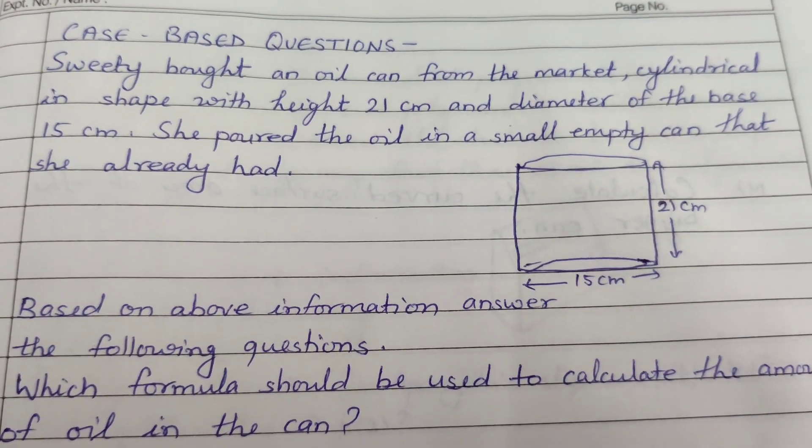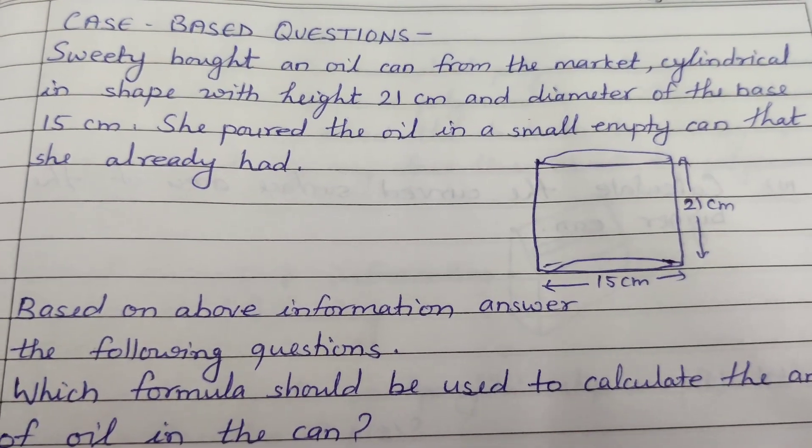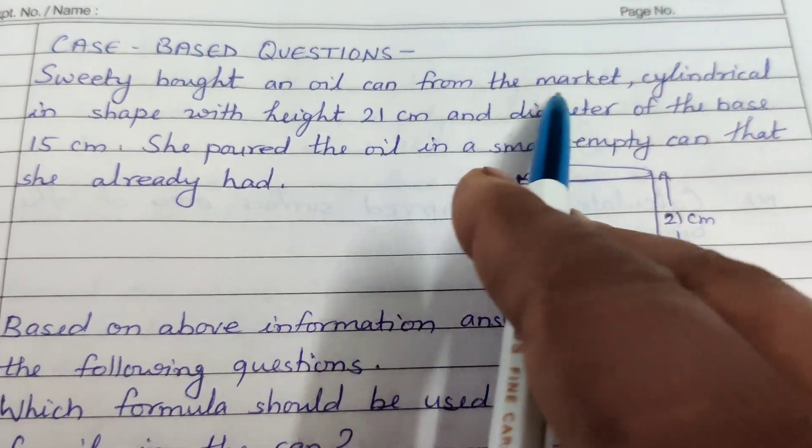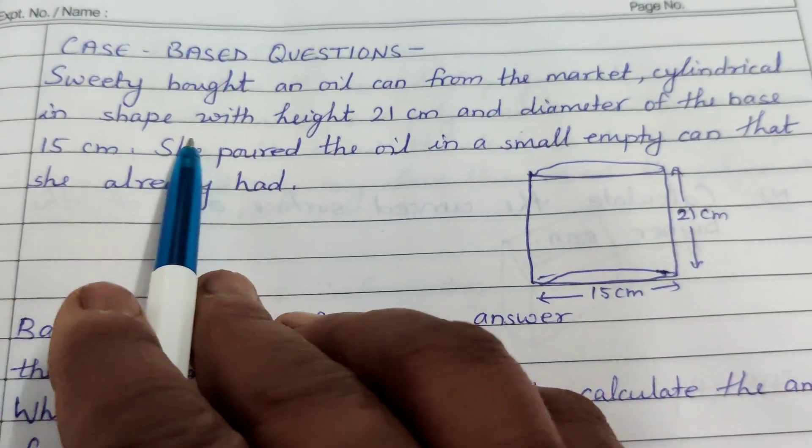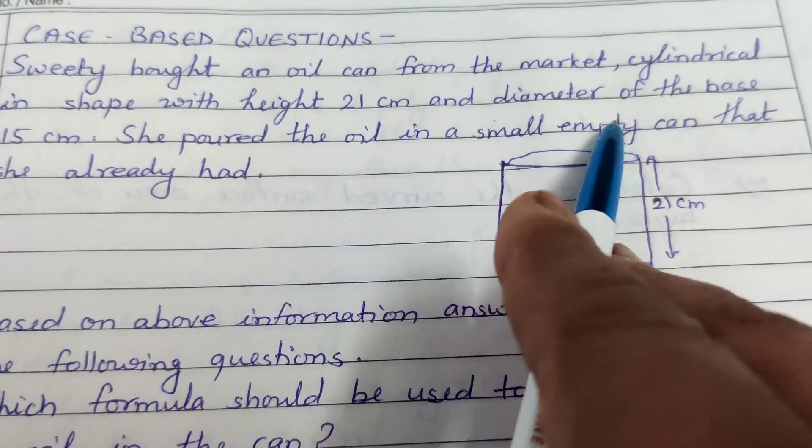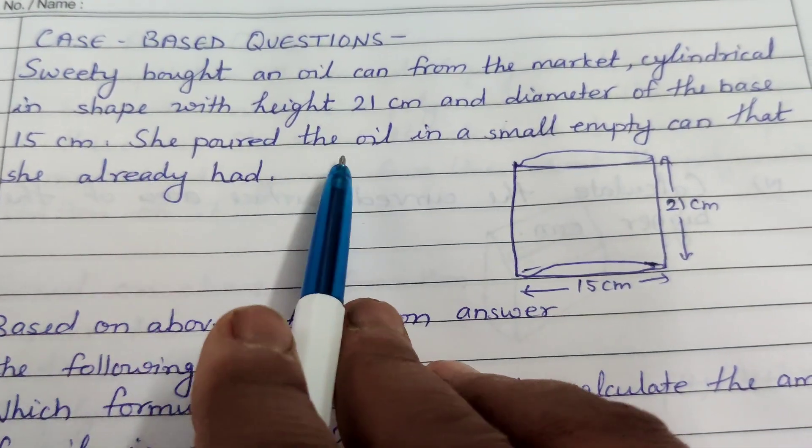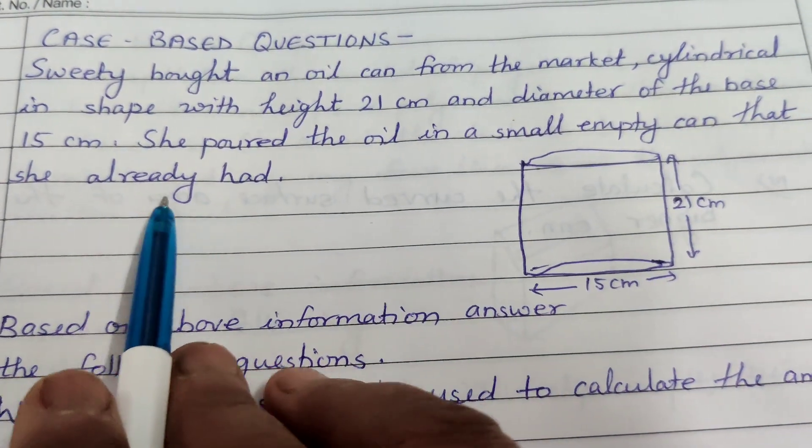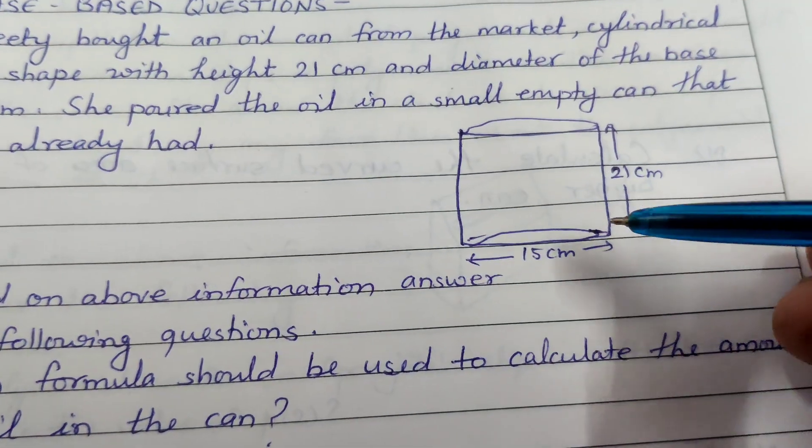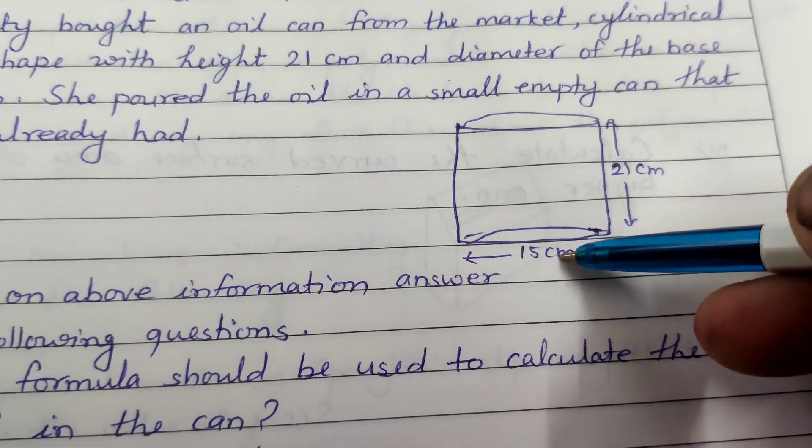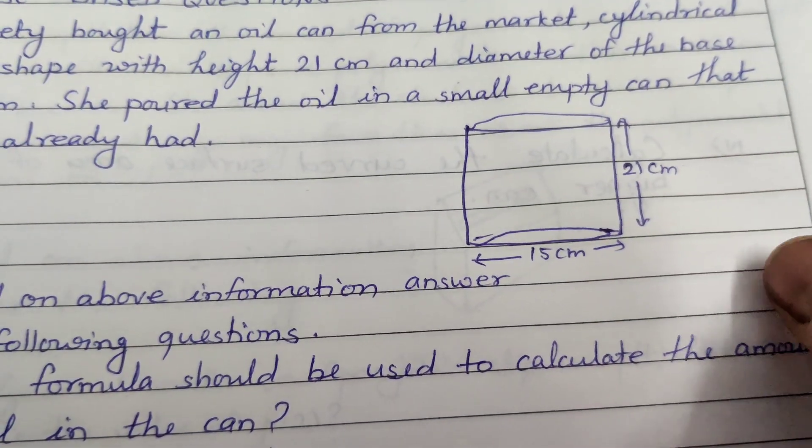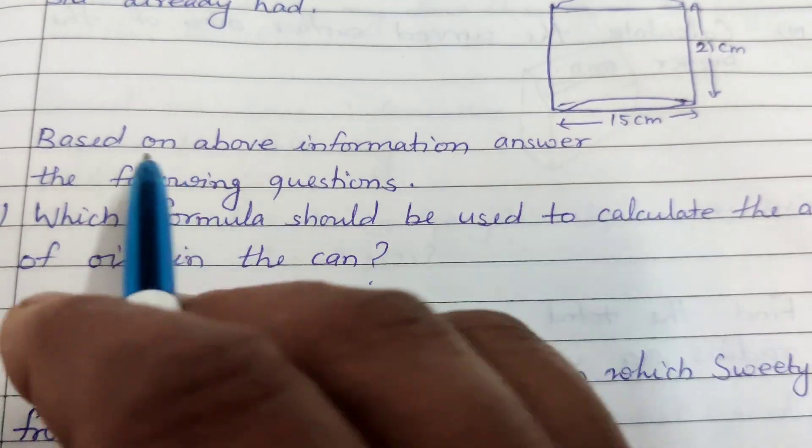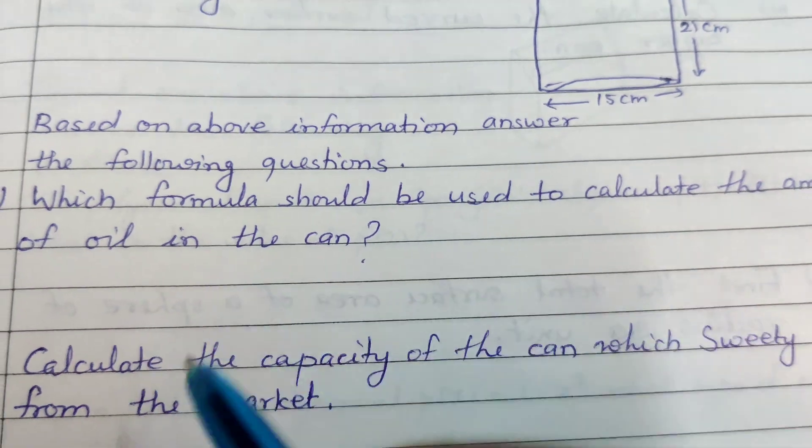Case study based question of chapter surface area and volume for class 9th. Sweetie bought an oil can from a market cylindrical in shape with height 21 centimeter and diameter of the base is 15 centimeter. She poured the oil in a small empty can that she already had. This is a can, 15 centimeter diameter and 21 centimeter height. This is an oil can.